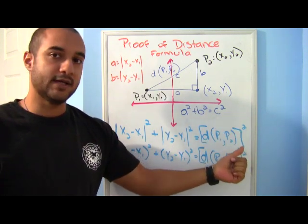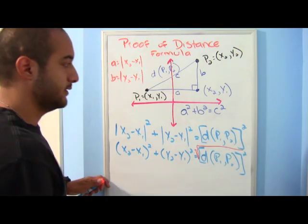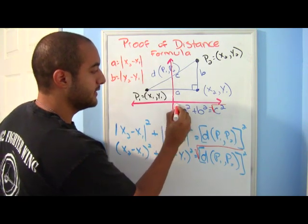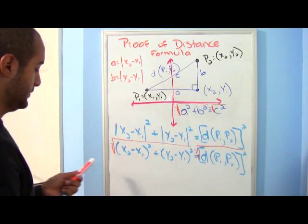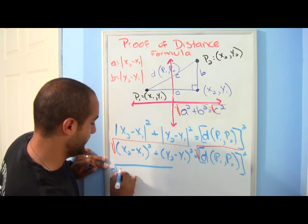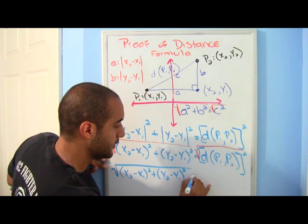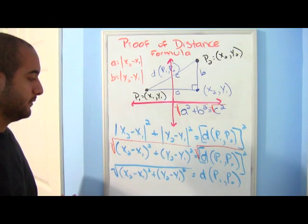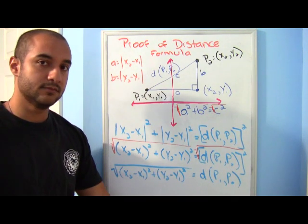To get rid of the square on this side, I'm going to take the square root. Let's take the square root here — that's our c. Since I did it on the right side, I'll go ahead and do it on the left, and the square root goes over everyone. Our final product looks like this: the square root of (x2 minus x1) squared plus (y2 minus y1) squared equals the distance of p1 and p2. That's the distance formula, and there you have your proof.